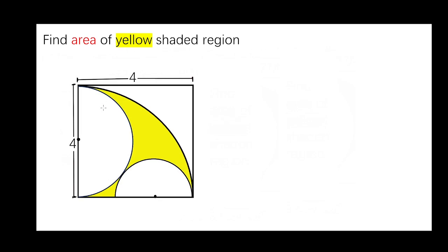Hi everyone. In this video, we are going to find the area of this yellow shaded region. Here we can see there is a quarter circle in a square and two tangent semicircles, one big and one small.